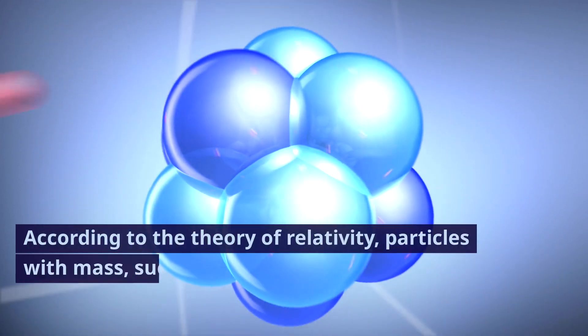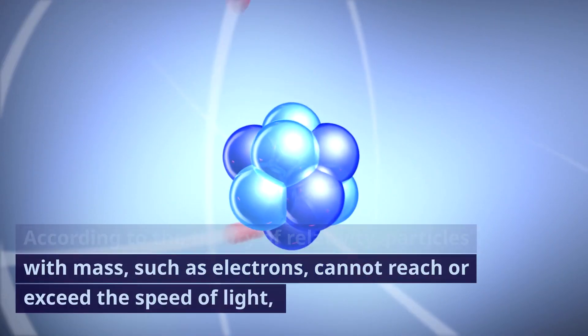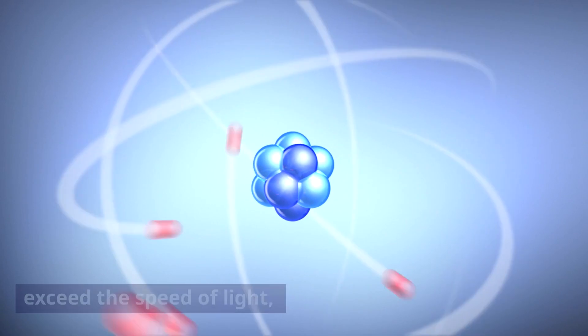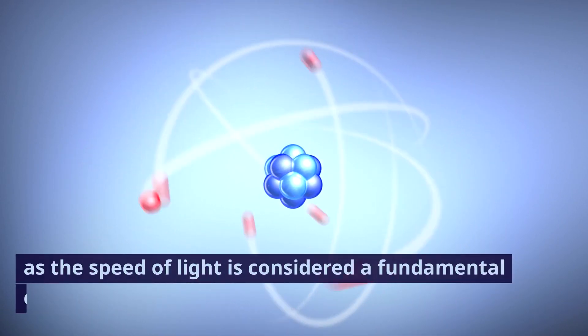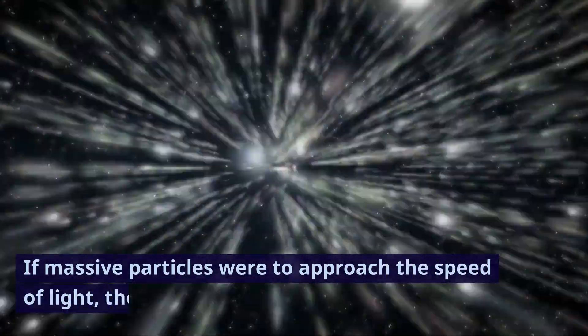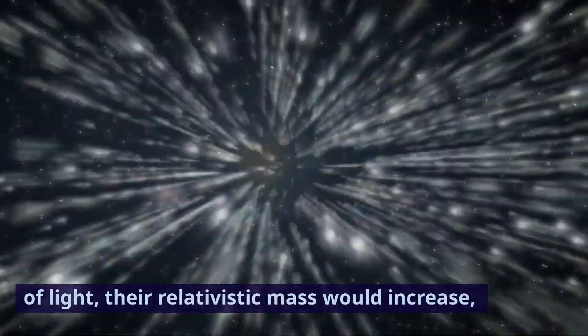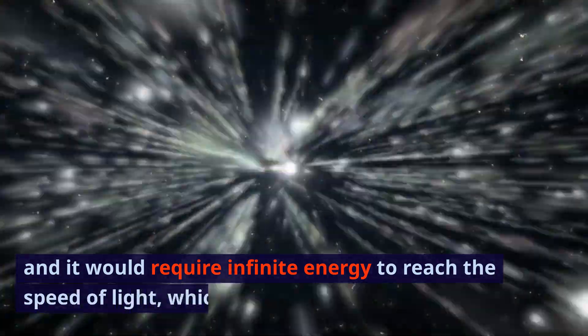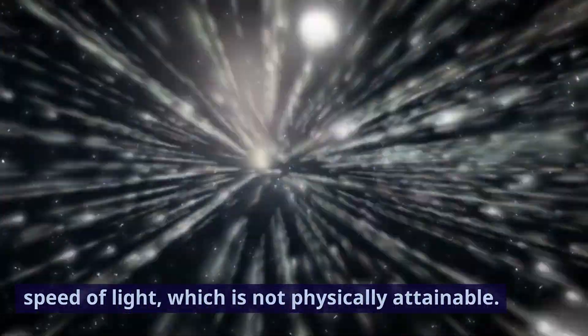According to the theory of relativity, particles with mass, such as electrons, cannot reach or exceed the speed of light, as the speed of light is considered a fundamental constant of spacetime. If massive particles were to approach the speed of light, their relativistic mass would increase, and it would require infinite energy to reach the speed of light, which is not physically attainable.